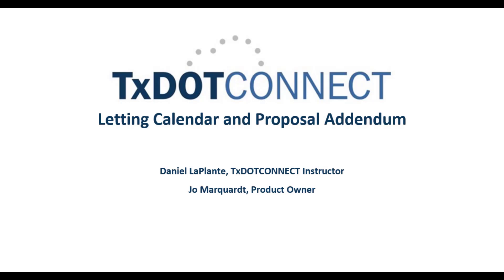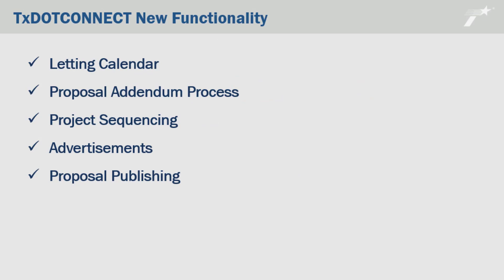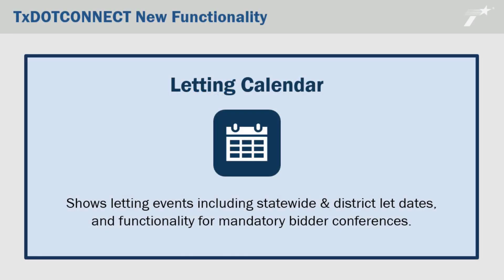Well, we have a lot of functionality coming up in release six, but I think what is most exciting is probably the letting calendar and the addendum process. But additionally, we'll have project sequencing, advertisements, and proposal publishing functionality. That all sounds exciting, but let's first start with something you mentioned — the letting calendar. Tell me more about that.